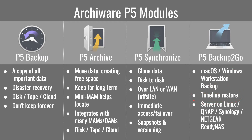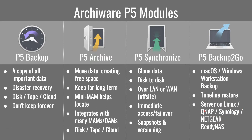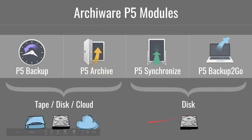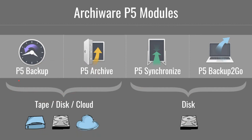Backup to Go has a timeline restore, a bit like Apple's Time Machine, and runs on devices that support snapshot file systems like QNAPs, Synologies, and Netgears, or on your own Linux OS with a snapshot file system. Synchronize and Backup to Go write to disk, while Backup and Archive read from your production disk storage and write out to disk, tape, or cloud.